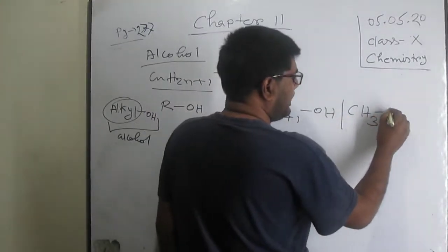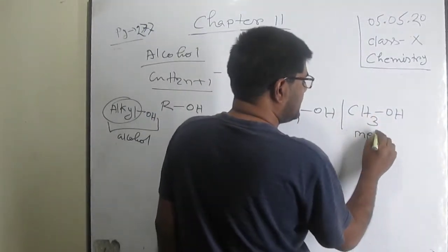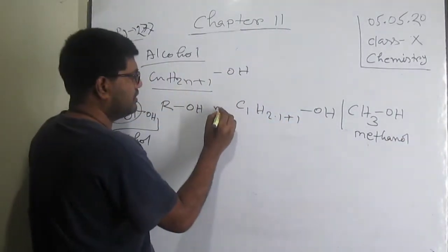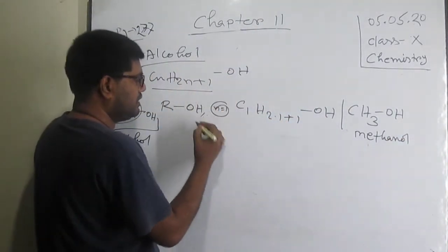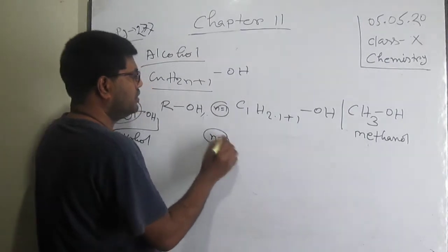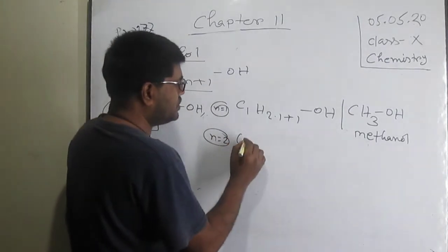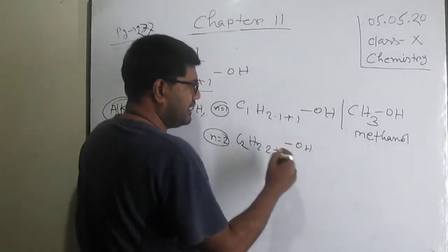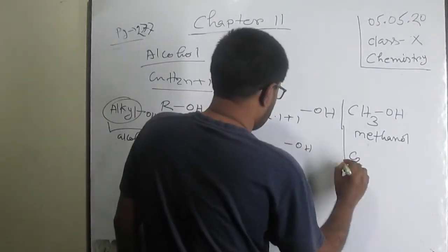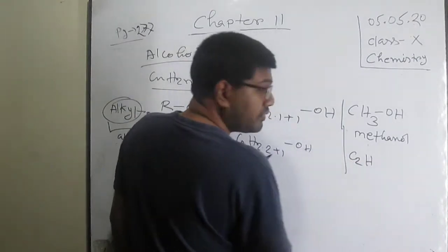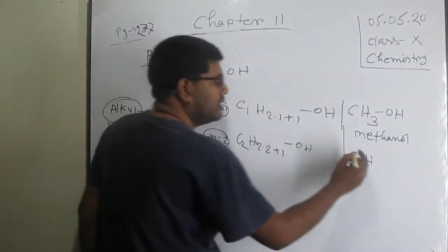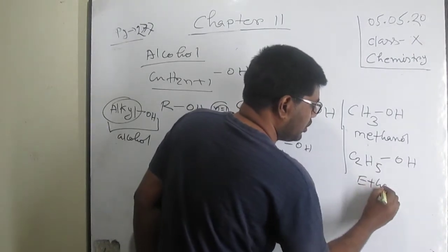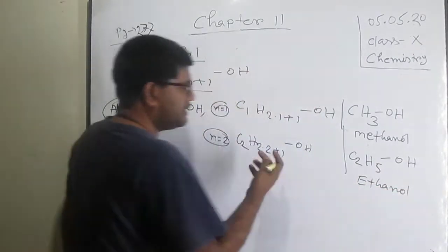For methanol (n=1): C1H(2+1)OH = CH3OH. For ethanol (n=2): C2H(2×2+1)OH = C2H5OH. This is called ethanol. This is the way to write the alcohols.